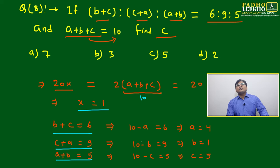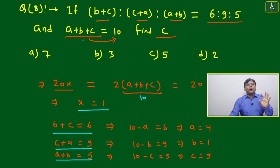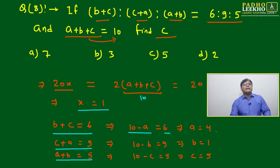Because common factor is 1, just put b+c equal to 10 minus a. So 10 minus a equals 6, therefore a equals 4. Similarly, b equals 1 and c equals 5.